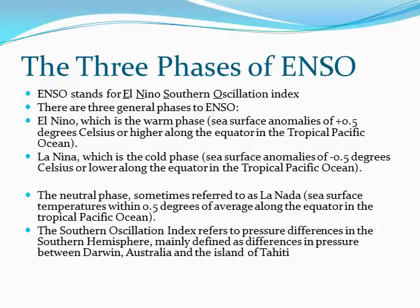The Southern Oscillation Index refers to the pressure differences in the southern hemisphere, mainly defined as differences in pressure between Darwin, Australia and the island of Tahiti.